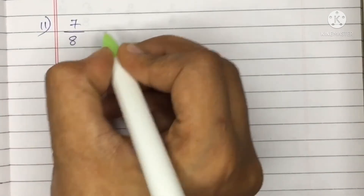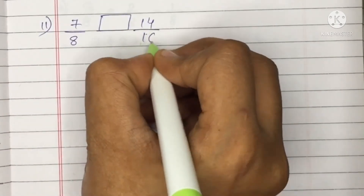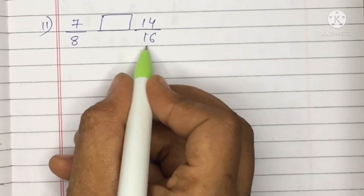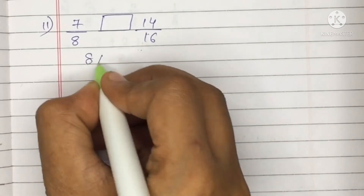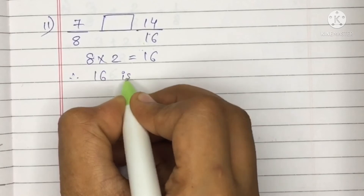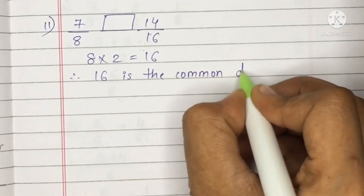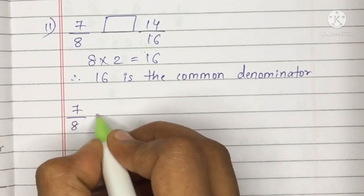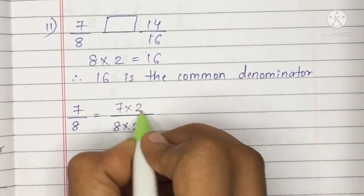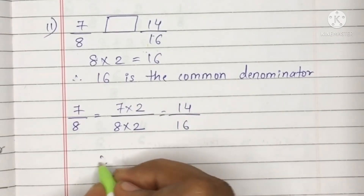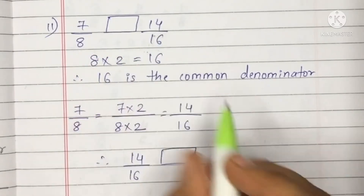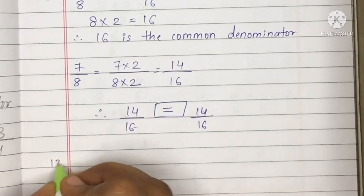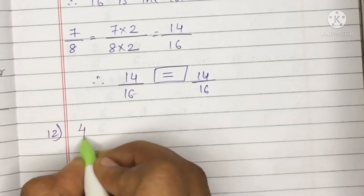Question 11: 7 upon 8 and 14 upon 16. No common numerator or denominator, but 16 appears in the table of 8 — 8 twos are 16. Multiply 7 upon 8 by 2: 7 twos are 14, 8 twos are 16. Now 14 upon 16 compared to 14 upon 16 — both are the same, so we put the equal to sign.